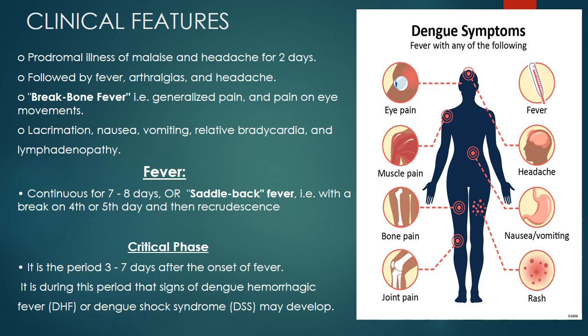Relative bradycardia and lymphadenopathy are also present. The fever is continuous for seven to eight days. It is also called saddleback fever, characterized by a break on the fourth and fifth day and then recrudescence.